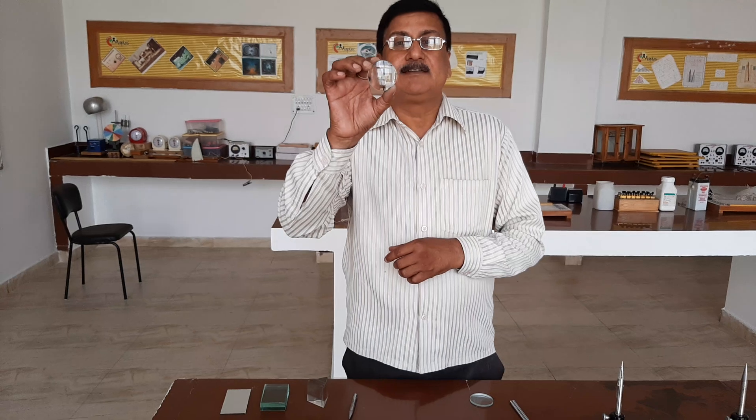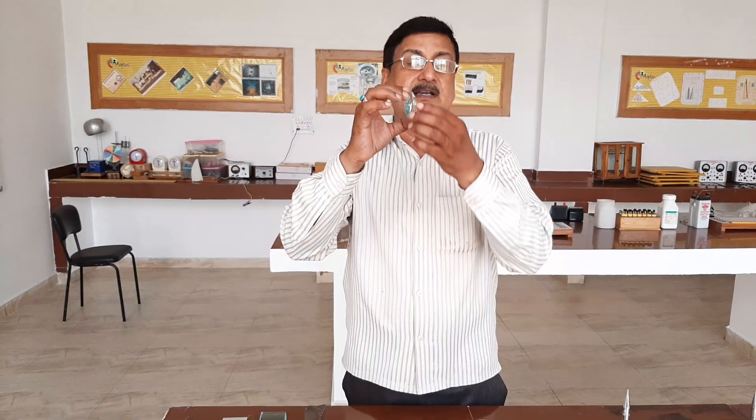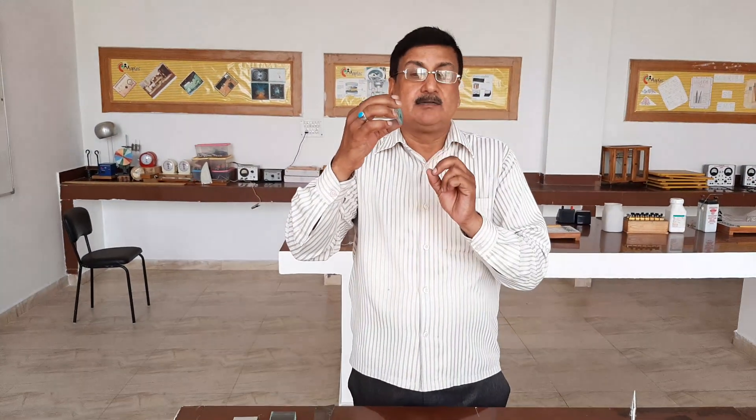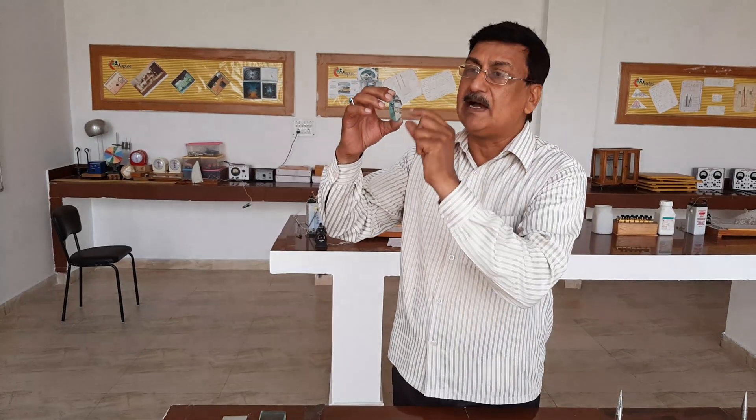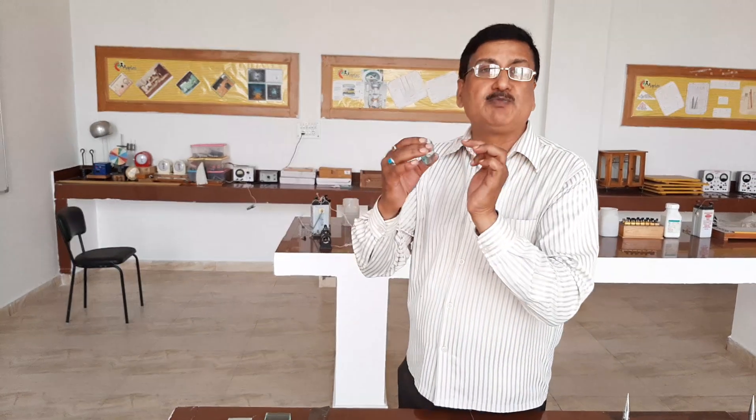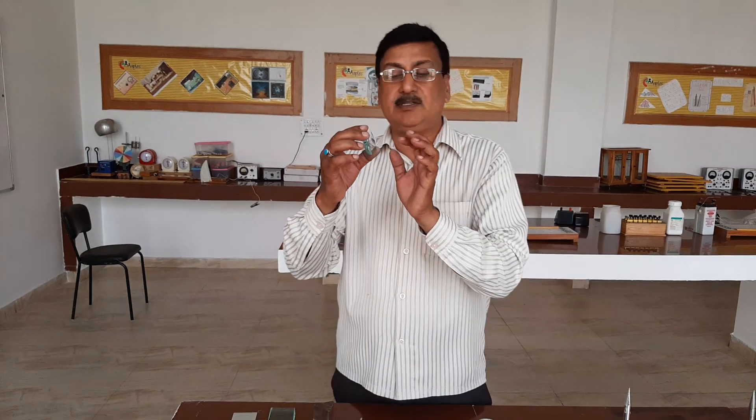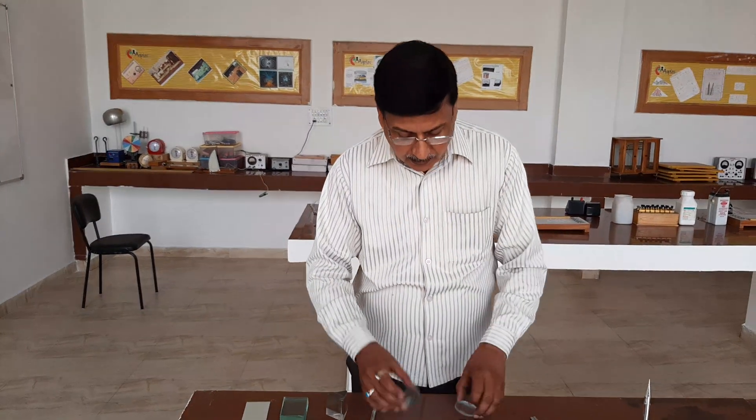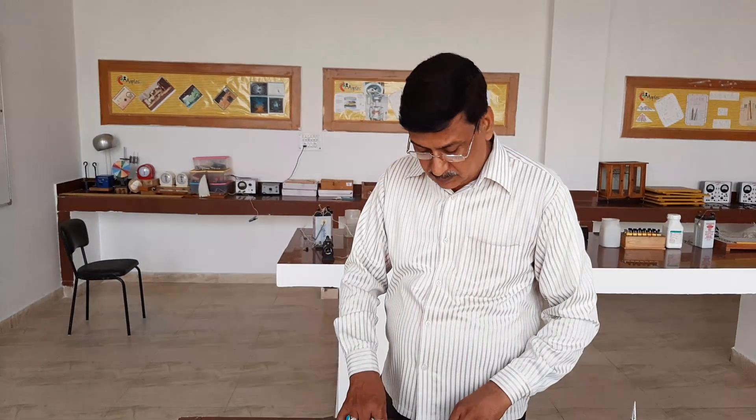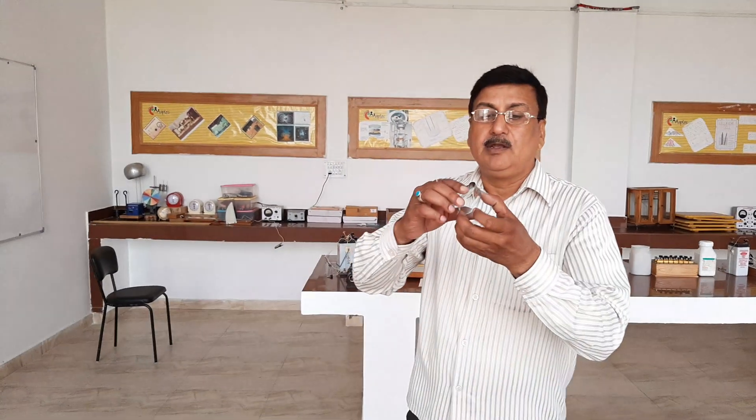This is convex lens, also known as converging lens. The light rays which are incident on this lens, it always converges them at focus point if these optical rays are parallel to the principal axis. Its middle is thick and edges are thin. While in concave lens, edges are thick and center is thin. It diverges or spreads the light rays which are incident on it parallel to the principal axis.